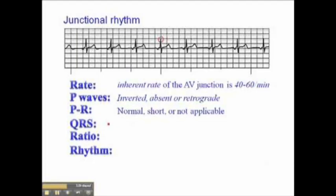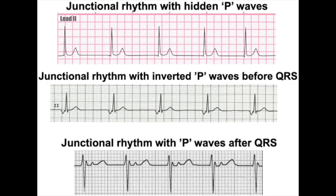AV junctional dysrhythmias: the AV node junction becomes the dominant pacemaker. Etiologies include sinus disease, coronary artery disease, digitalis toxicity (most common rhythms), myocarditis, and can occur without structural heart disease. EKG: regular rhythm; P waves are inverted or absent in leads where normally positive (1, 2, AVF); narrow QRS. Junctional rhythm: rate 40-60 (intrinsic AV node rate). Accelerated junctional: 60-100. Junctional tachycardia: over 100.